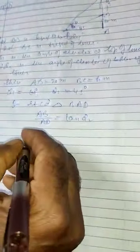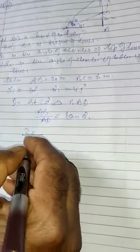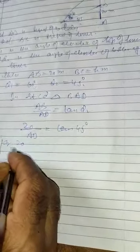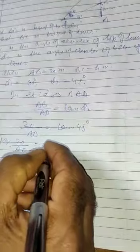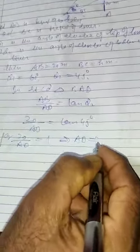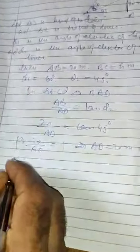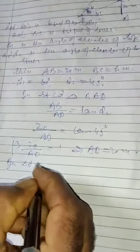This implies that AD is equal to 20 meters. Now in right angle triangle CAD, AC by AD is equal to tangent of theta 1.